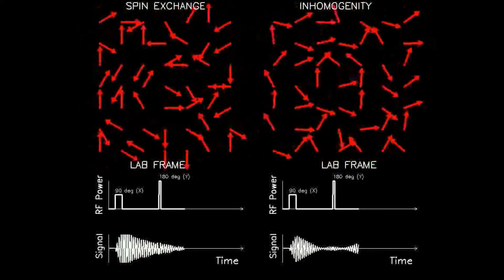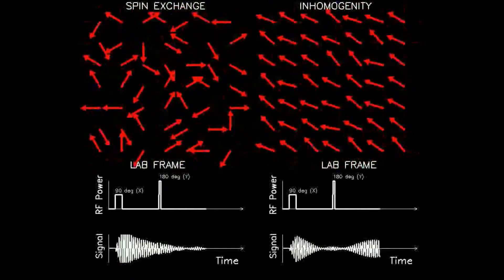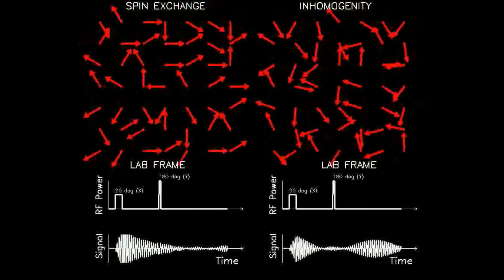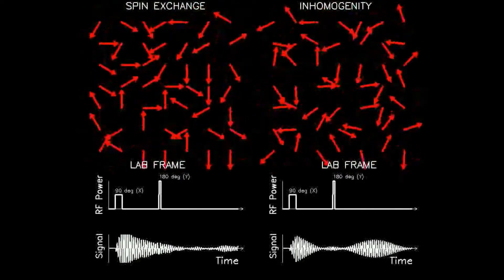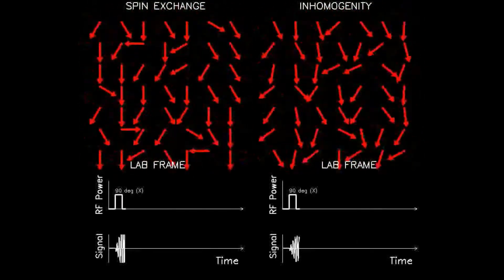The left side is identical except for the mechanism of dephasing. Notice that after the 180 degree reversal pulse is administered, an echo is not formed and a second pulse is not obtained. This is due to the fact that dephasing due to spin exchange is not recoverable.